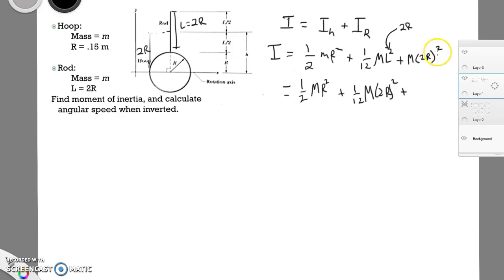This becomes 1 12th times M times 2R squared. Then here, 2R squared there is going to become 4R squared M. Or let's write it like that. Let's write it 4MR squared.